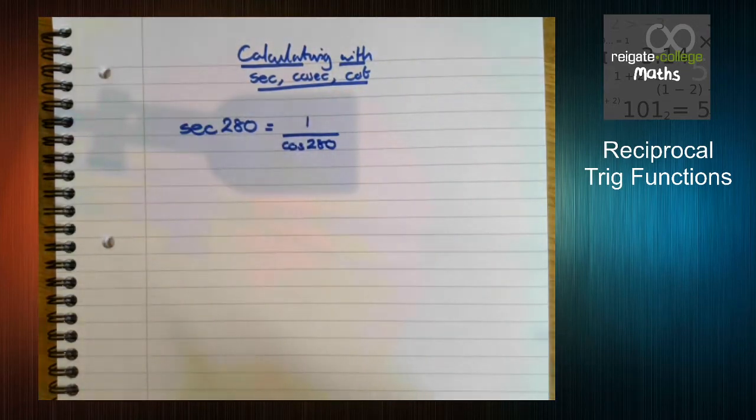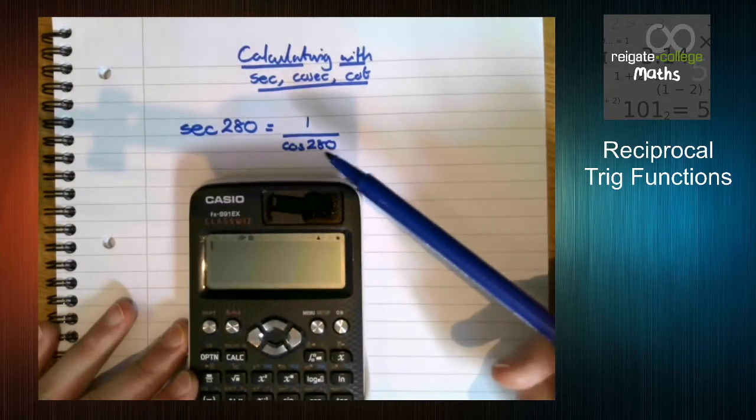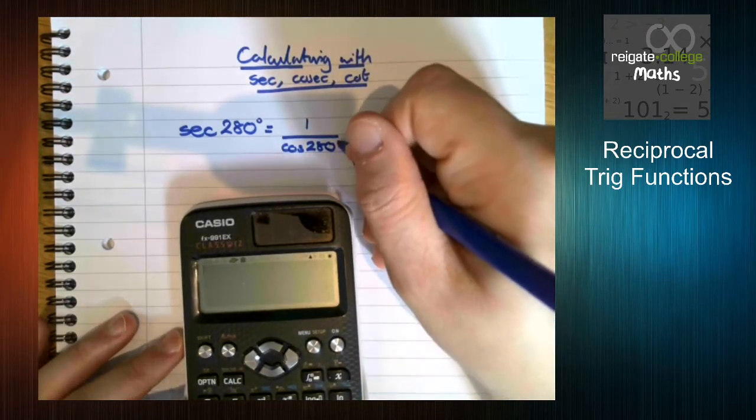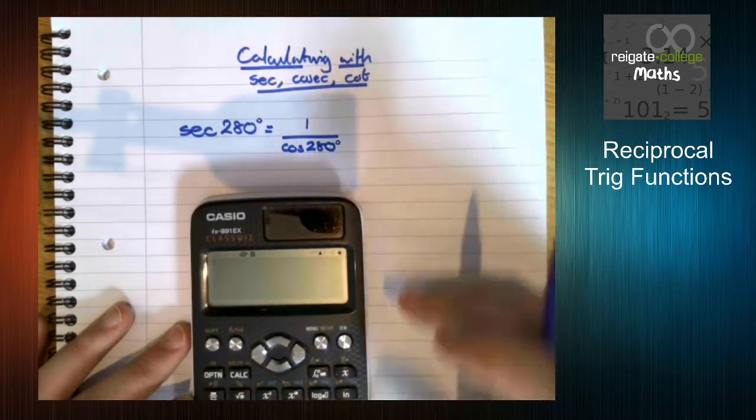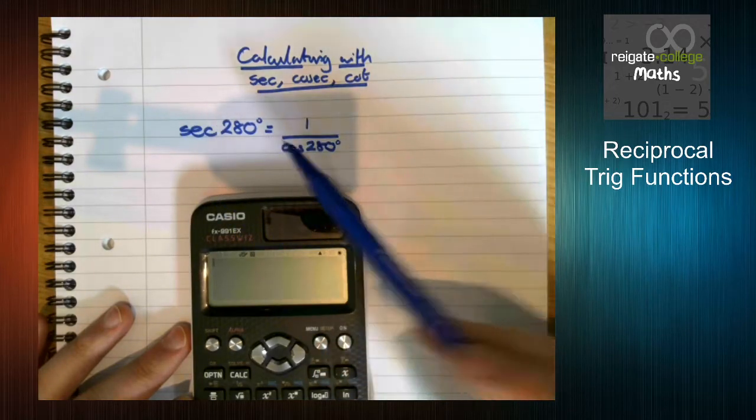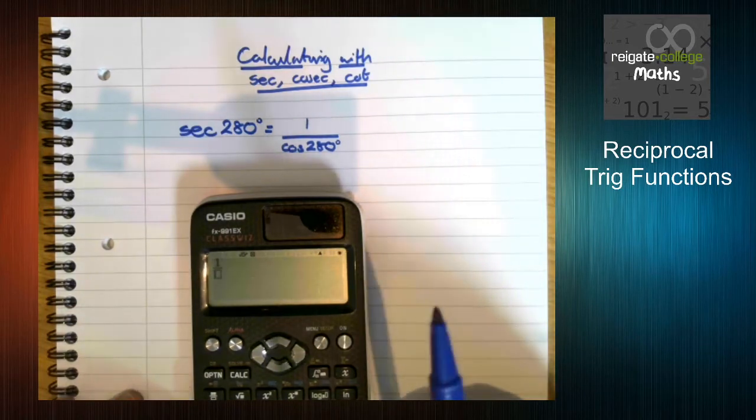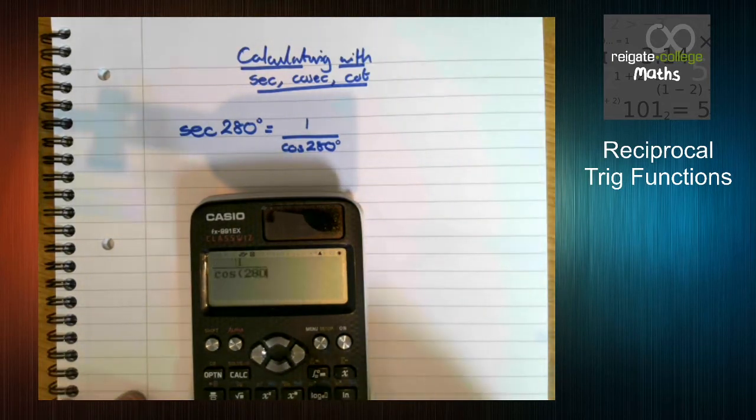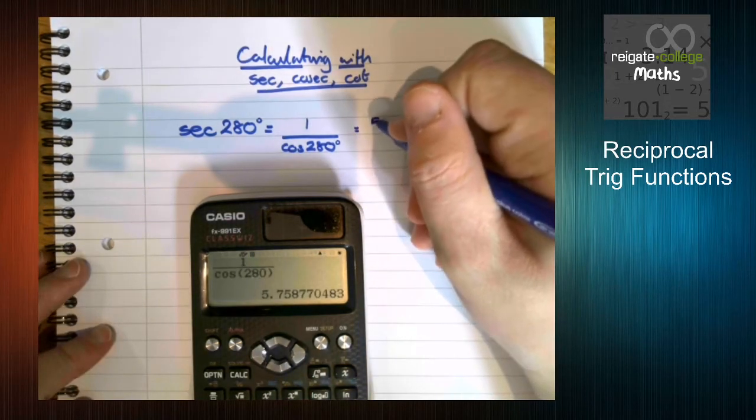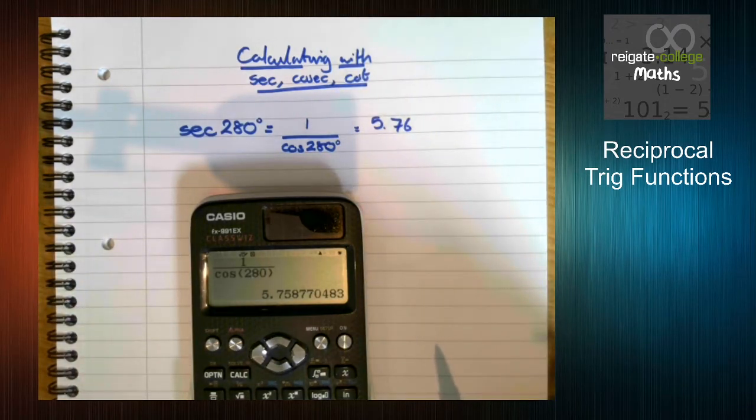We know that this is the same as 1 over cos of 280, which you then just stick in your calculator. We're clearly working in degrees. So instead of typing in sec 280, we know that sec is 1 over cos, so we just do 1 over cos of 280, and it gives us the answer.